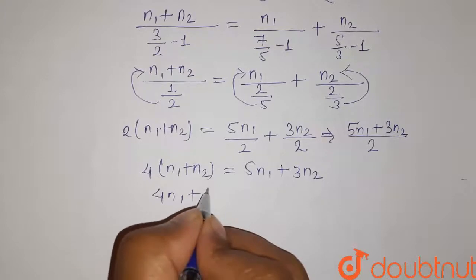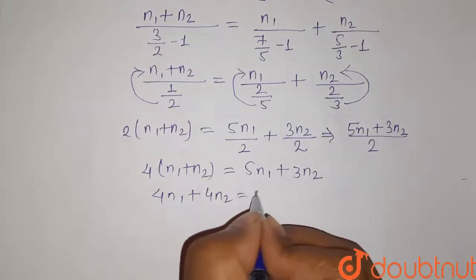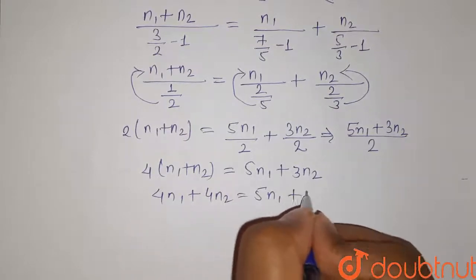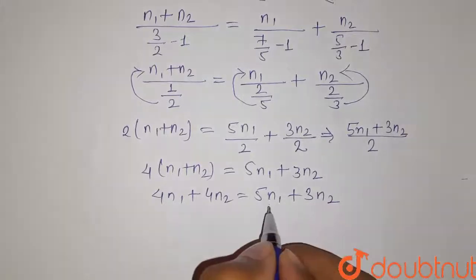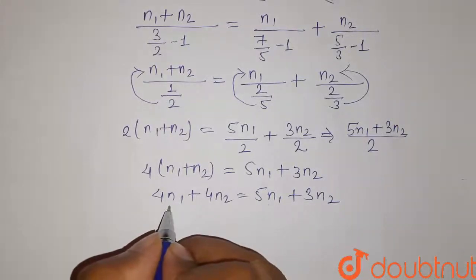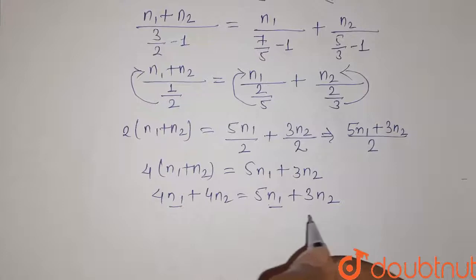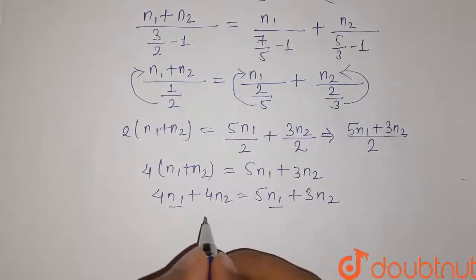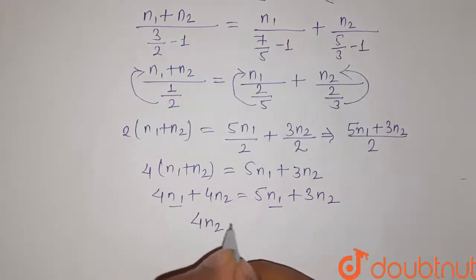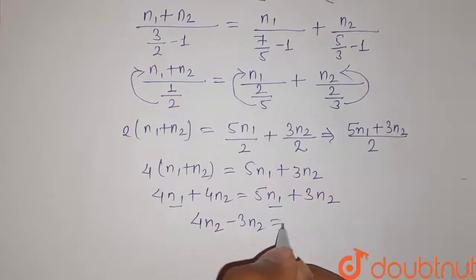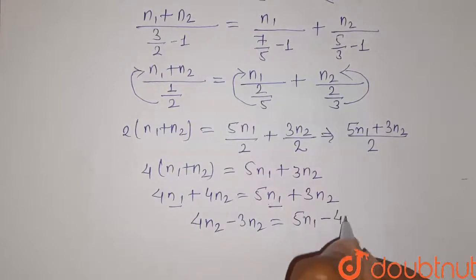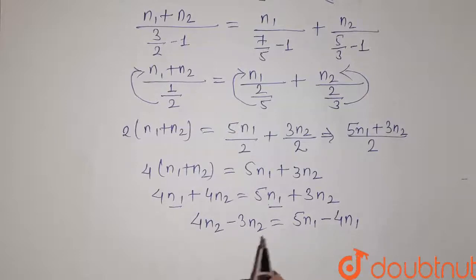So 4N1 plus 4N2 equals 5N1 plus 3N2. Now take the terms having N1 on one side and N2 on the other side. So it will be 4N2 minus 3N2 equals 5N1 minus 4N1.